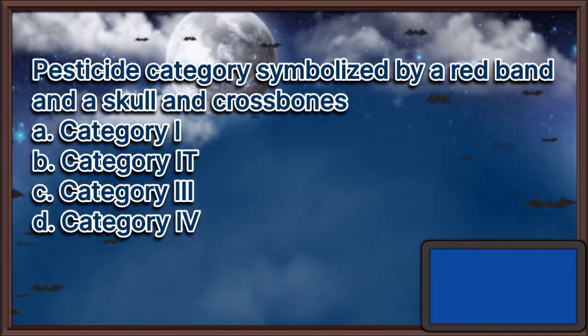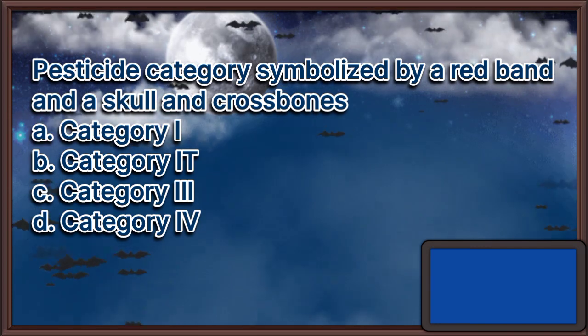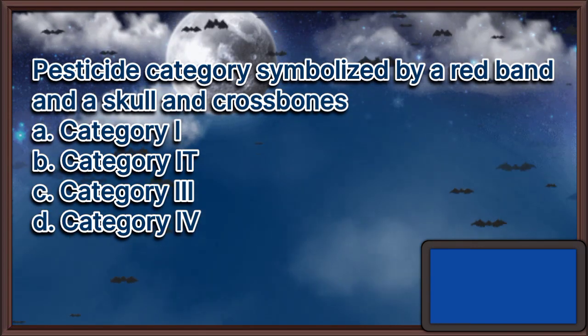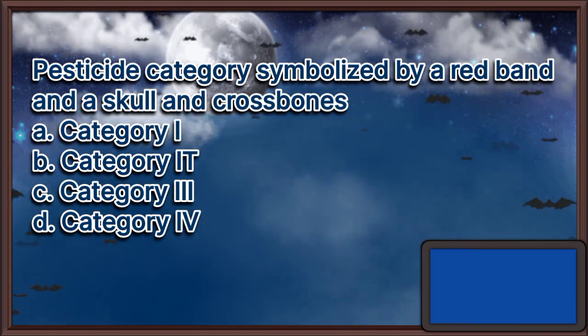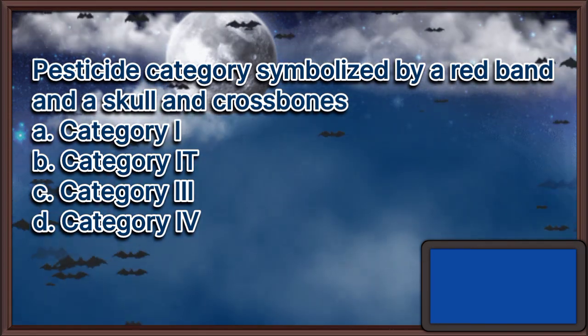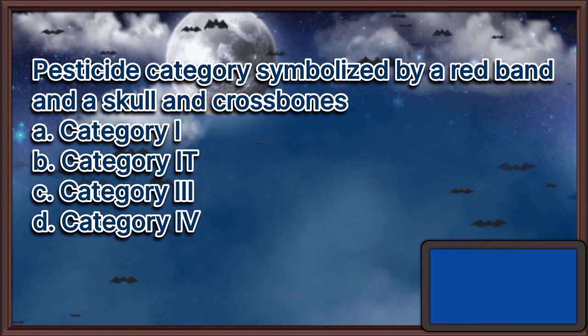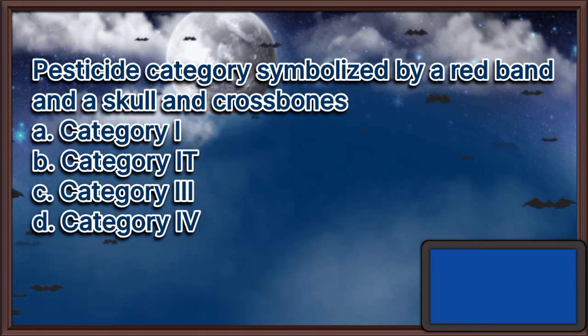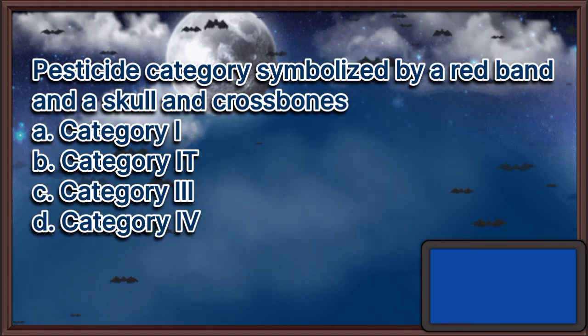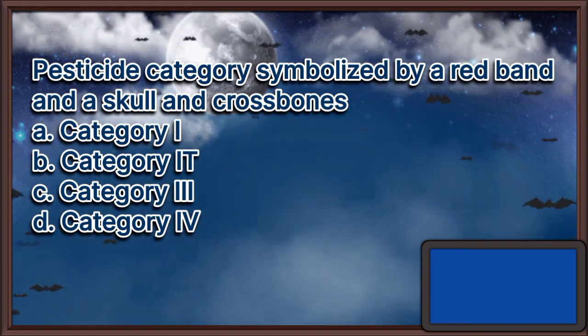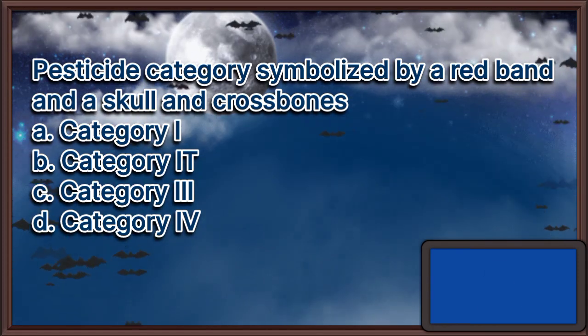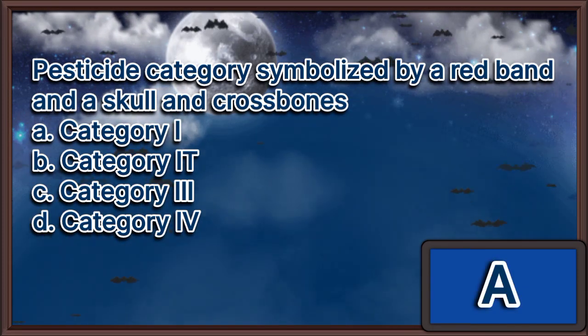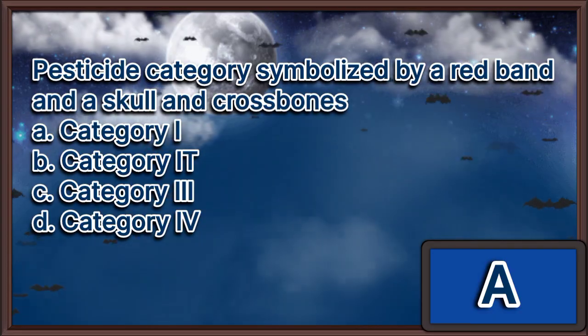Pesticide category symbolized by a red band and a skull and crossbones. A. Category 1. B. Category 2. C. Category 3. D. Category 4. The answer is letter A.